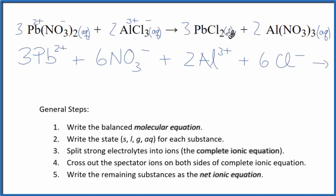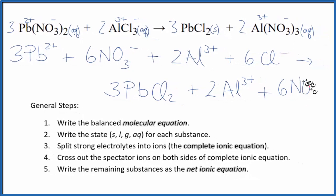In the products, when we have a solid, we don't split that apart. So it's just going to be 3 PbCl2. And then we said nitrates, 1 minus, 3 plus for the aluminum. So I'll have two of the aluminum ions plus two times the three nitrate ions, six nitrate ions. So this is the complete ionic equation.